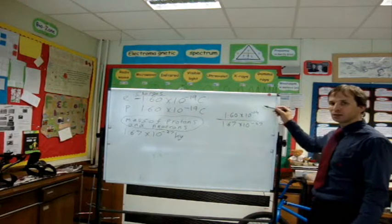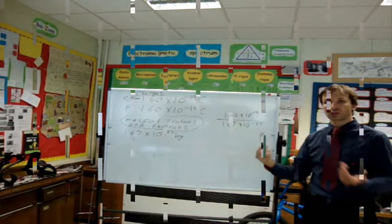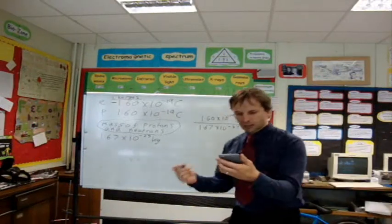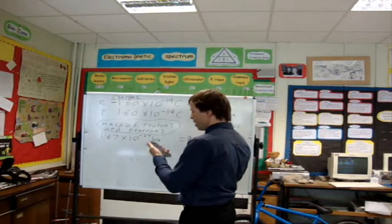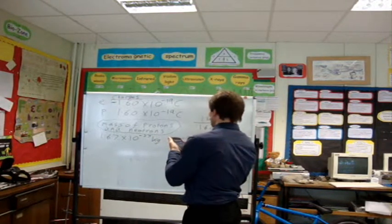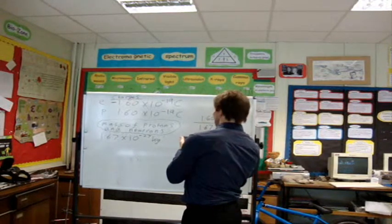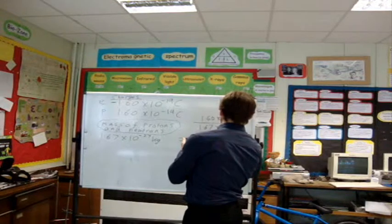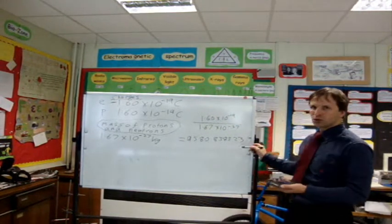Okay, so if we divide those two together, then we should get the exact number. Okay, so I've just done this on my calculator, and I've come up with a number of this. I've got 9.58083832.3. Right, okay, so that is a charge to mass ratio.